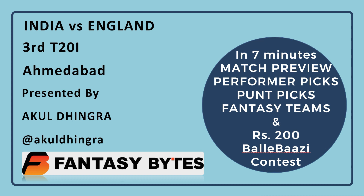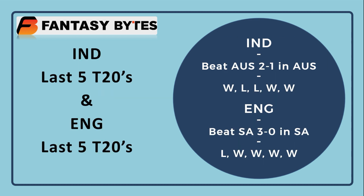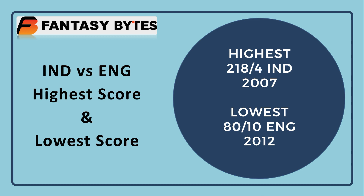Let's hope today's video is more accurate. Head to head it is 8-all between the two teams. Last 5 games, India leads 3-2. Last 10 games it is 5-5, and India has won this series 2-1 making it 1-1. India won their last series vs Australia 2-1 with 3 wins in last 5 games. England beat South Africa 3-0, with 4 wins in last 5 games.